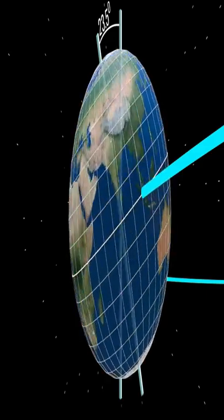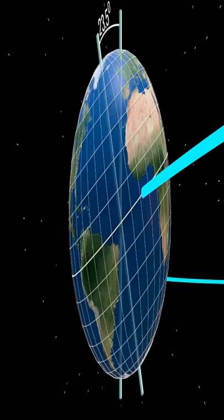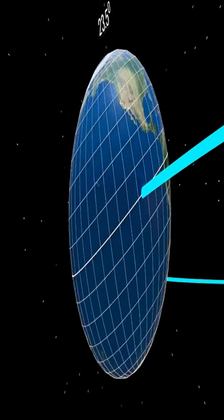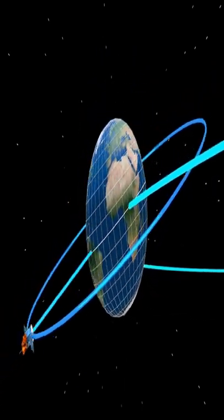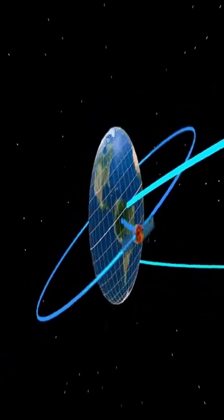For satellite TV to work, the satellite should not move relative to your house. This means that the satellite should rotate at the same speed as that.